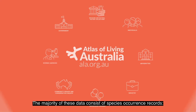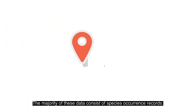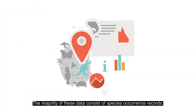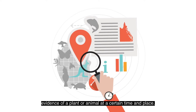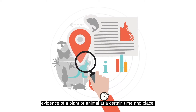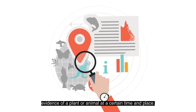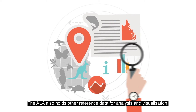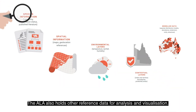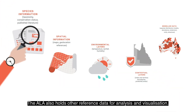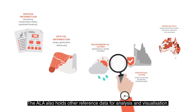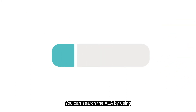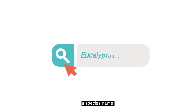The majority of these data consist of species occurrence records — evidence of a plant or animal at a certain time and place. The ALA also holds other reference data for analysis and visualisation.